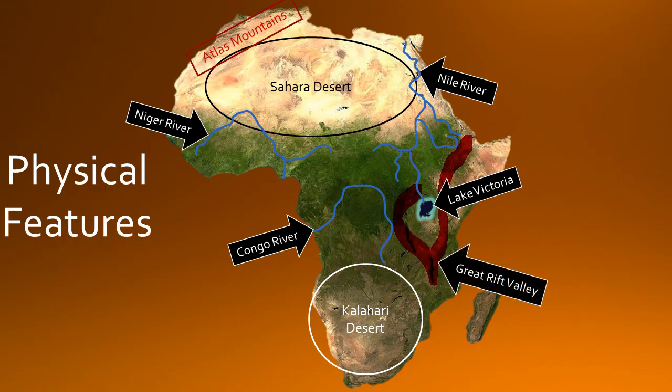This is the Great Rift Valley. It is in eastern Africa and surrounds Lake Victoria, and tectonic plates are what caused the rift.